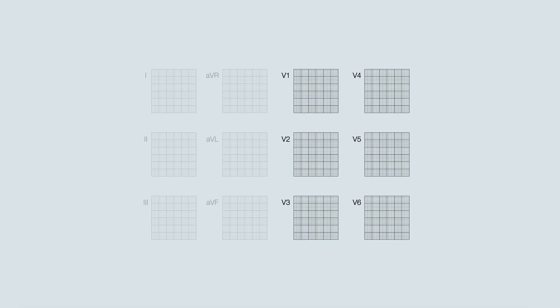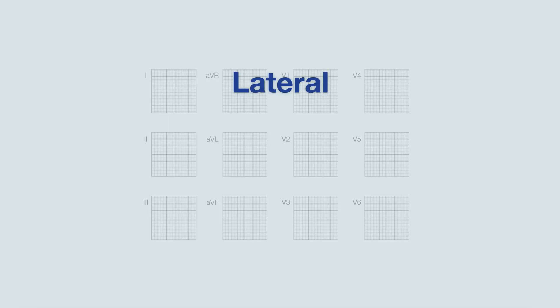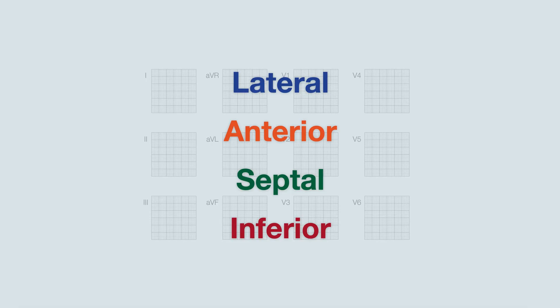These leads are leads 1, 2, 3, AVF, AVL, AVR, and V1 through V6. They theoretically provide us with 12 different views or perspectives of the heart. These can be further grouped as lateral, anterior, septal, and inferior leads.